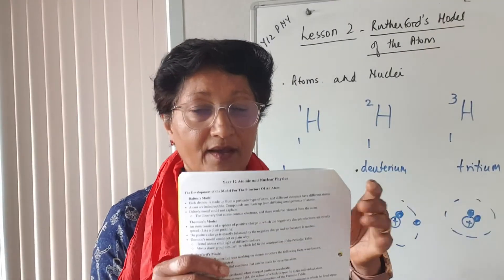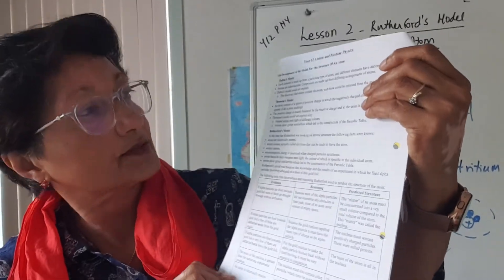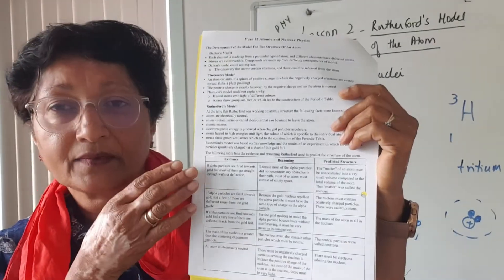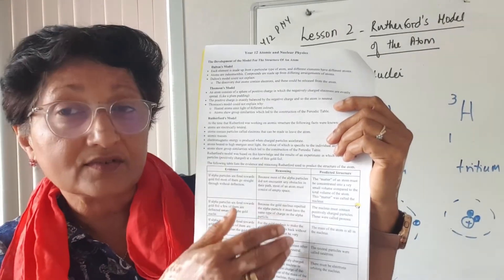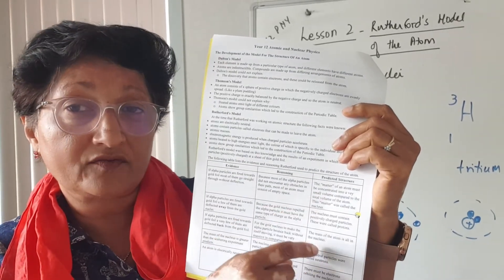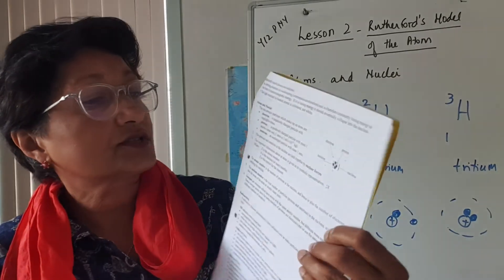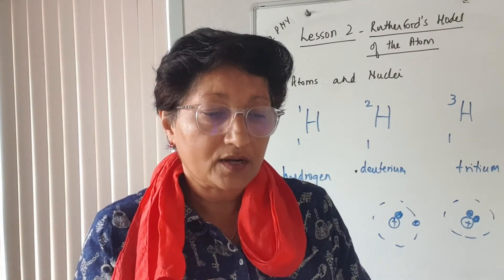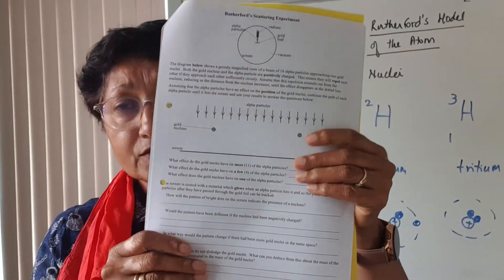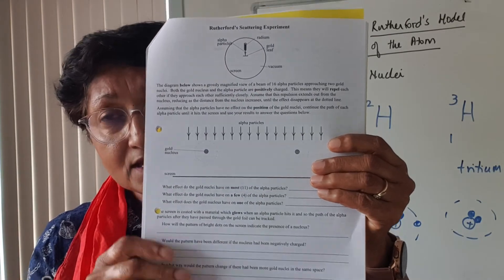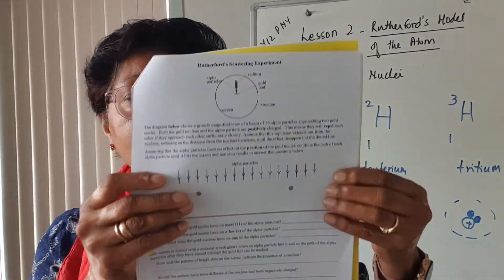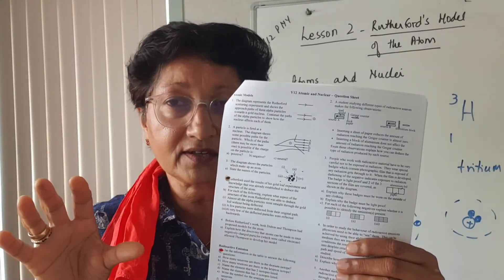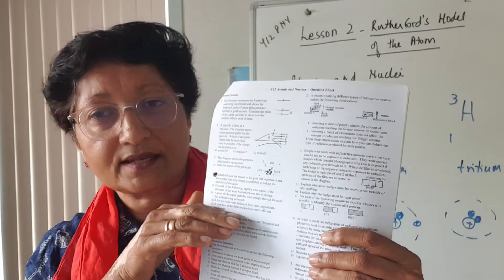Once you've listened to my video, please read all of page two — everything is important. Read about the table three to five times if you can, because it's very important — it's about Rutherford's experiment, his evidence, his reasoning, and the conclusions he came to about the structure of the atom. There is also some work for you to do: work through the Rutherford's scattering experiment questions, and the atom models questions. Once you've finished both videos, you should be able to do all those questions.